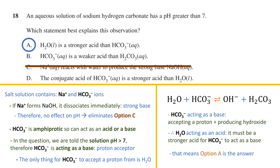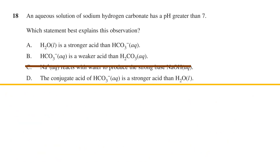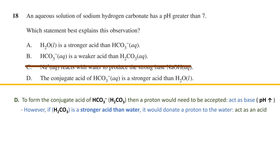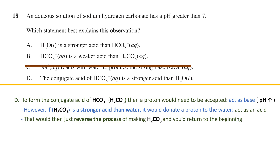To understand why the other options are wrong: option D states that H₂CO₃ (the conjugate acid of hydrogen carbonate) is a stronger acid than water. If that were true, the H₂CO₃ formed would immediately donate its proton back to the water, reversing the process of making H₂CO₃ in the first place. This does nothing to explain why the sodium hydrogen carbonate solution is basic, so option D is eliminated.